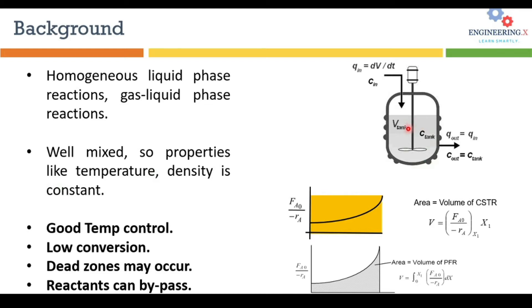Inside the reactor, properties like temperature and density are constant throughout the reactor. Another thing that is different from a plug flow reactor: the concentration inside the reactor is equal to the concentration of the outlet stream. Regarding merits, because the temperature is homogeneously distributed — constant temperature inside the reactor — the temperature control is good in CSTR.